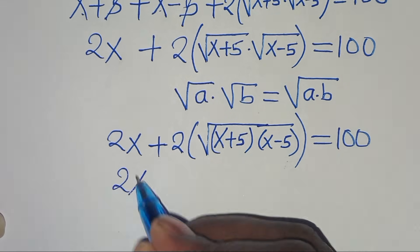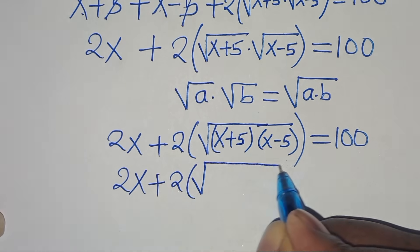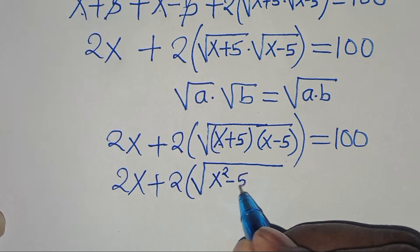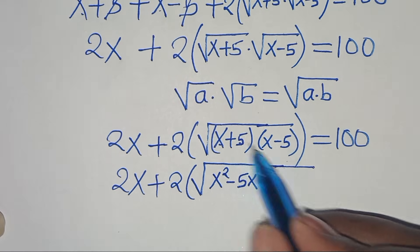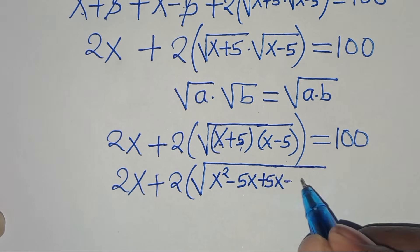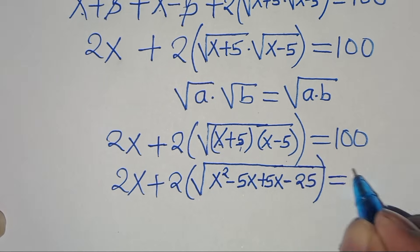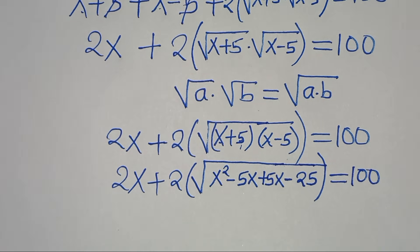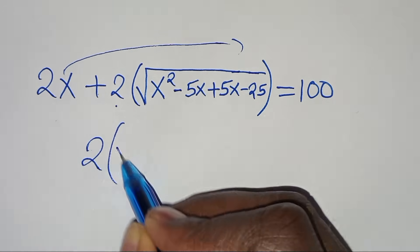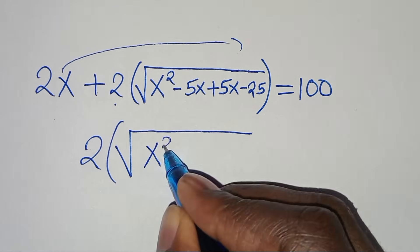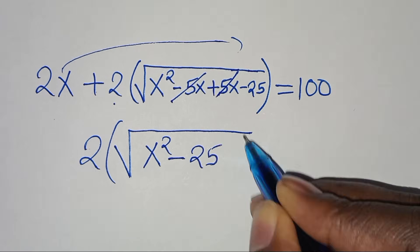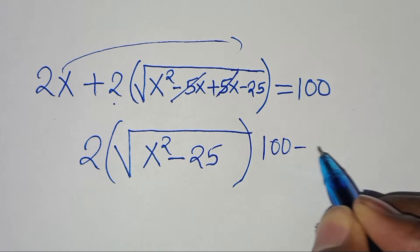So we have 2x plus 2 times the square root of: x·x = x², x·(−5) = −5x, 5·x = +5x, and 5·(−5) = −25, all inside the square root, equal to 100. The −5x and +5x simplify, leaving 2x plus 2 times the square root of (x²−25), equal to 100.